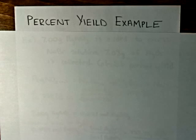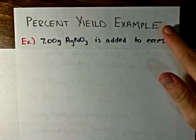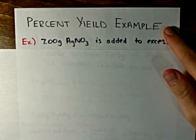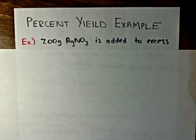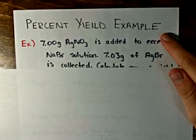In this video I want to do a percent yield example. In this question we're told that 7 grams of silver nitrate is added to excess sodium bromide solution.